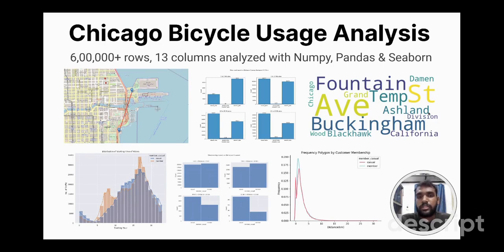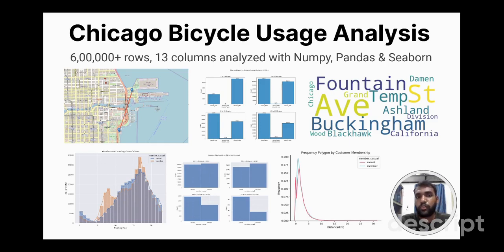My first project is exploratory data analysis on Chicago bike cycle rent usage. This dataset was obtained from Kaggle and it provides information about the routes taken and the distance traveled by cyclists in Chicago. The dataset contains around 600,000 plus rows and 13 columns, which were analyzed using NumPy, Pandas, and Seaborn. Various visualizations were developed such as folium maps, bar graphs, histograms, and KDE plots. One interesting insight was that cyclists tend to travel longer distances in a short period of time using electric bicycles.